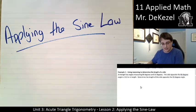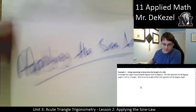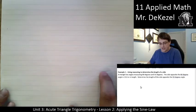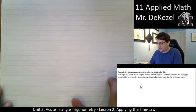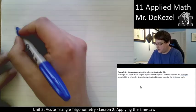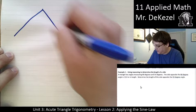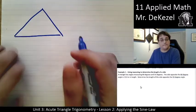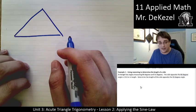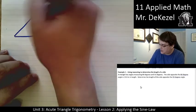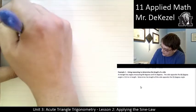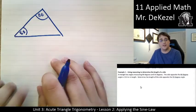So example one, a triangle has angles measuring 80 and 55 degrees. Opposite the 80 degree angle, we have a 12 meter side. Let's determine the length of the side opposite 55 degrees. Let's draw the triangle here nice and big. So we have angles measuring 80 and 55 degrees. Let's just toss them in here, 80 degrees here, and 55 degrees right there.